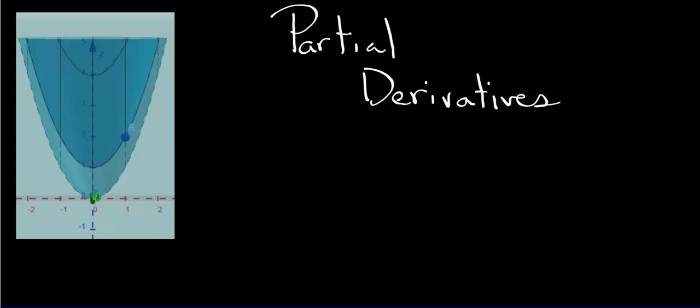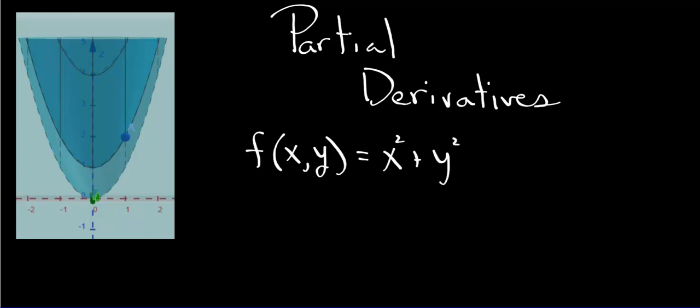What we want to do now is address the subject of differentiation when you have multivariable functions. For example, let's suppose we have a function f of xy equals x squared plus y squared. This is a paraboloid. And let's suppose that we want to find a line that is tangent to the graph at the point (1, -1, 2). In other words, we let y be negative 1, x is 1, and then z would, of course, be 2. Let's suppose we want to find an equation for a tangent at that point.